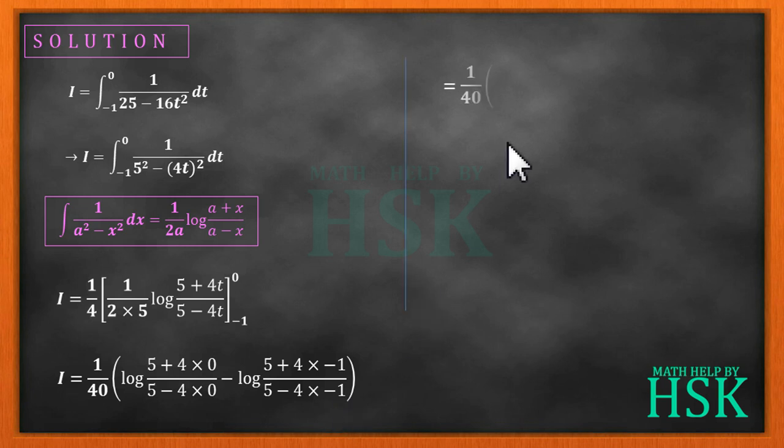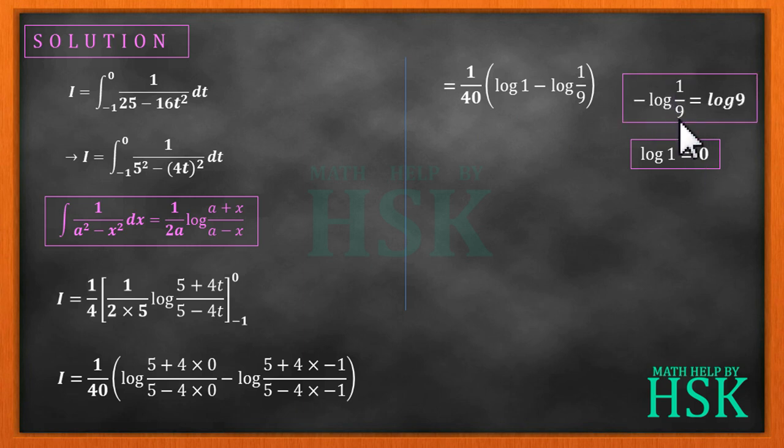Which on simplification gives 1 by 40 times log 1 minus log of 1 by 9. Since log 1 is equal to 0, and minus log of 1 by 9 is equal to log 9, so we get the final value of I is 1 upon 40 log of 9, which is the required answer.